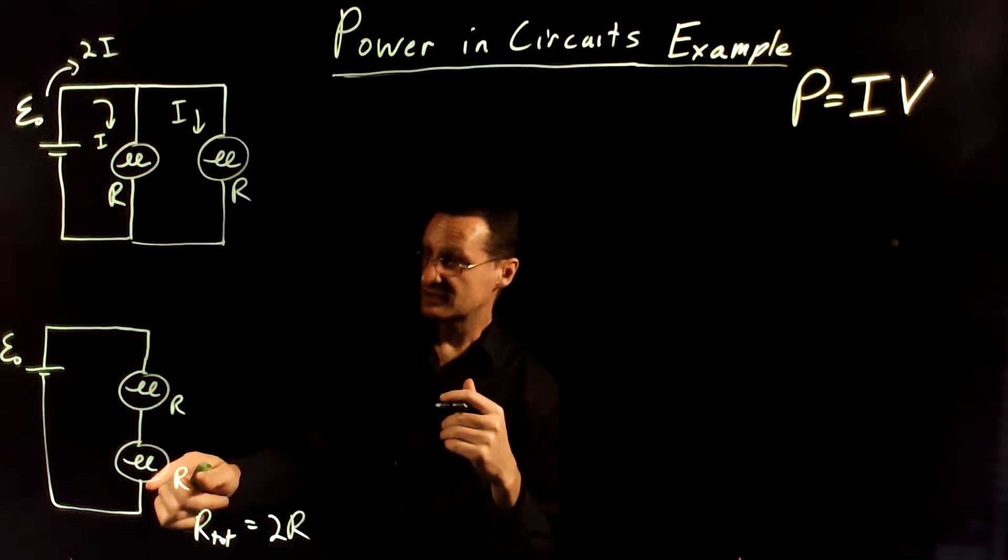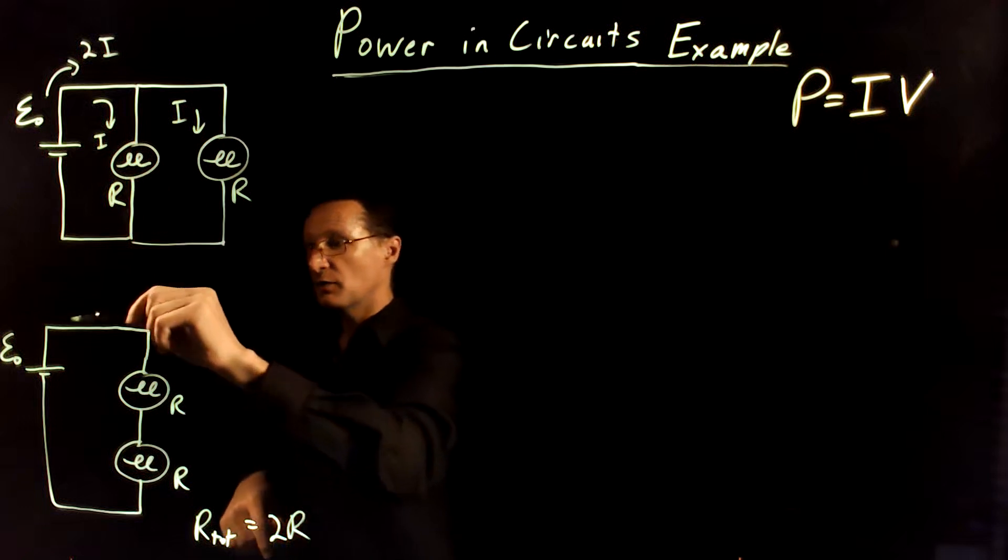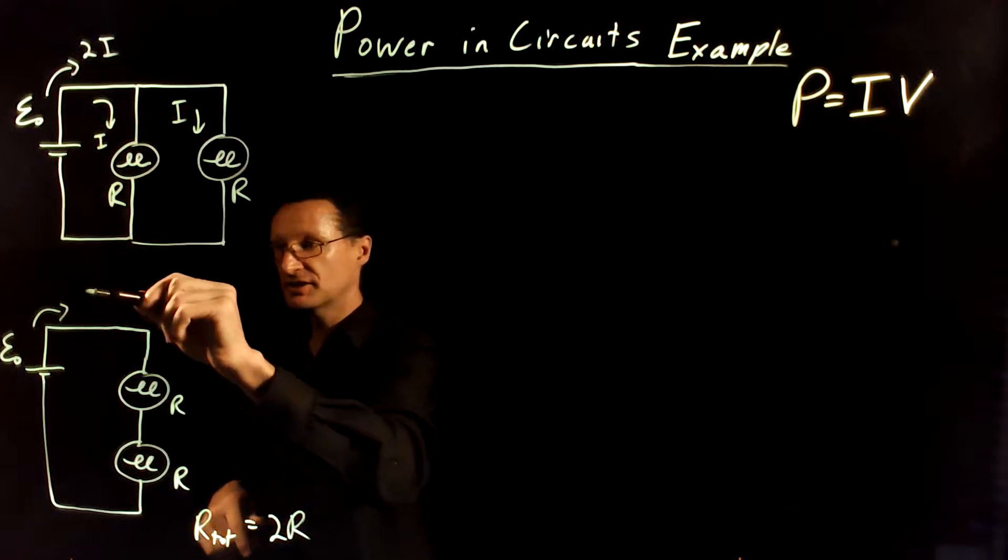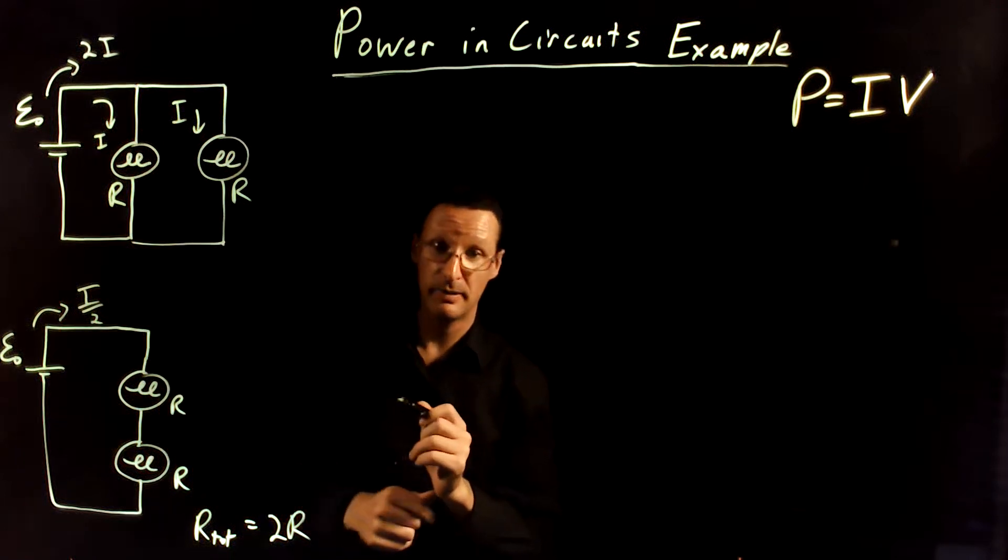Because this resistance is twice as much as this one individual resistance, that means that we're only going to get half as much current. So, I'm only going to get I over 2 current coming out of the battery here.